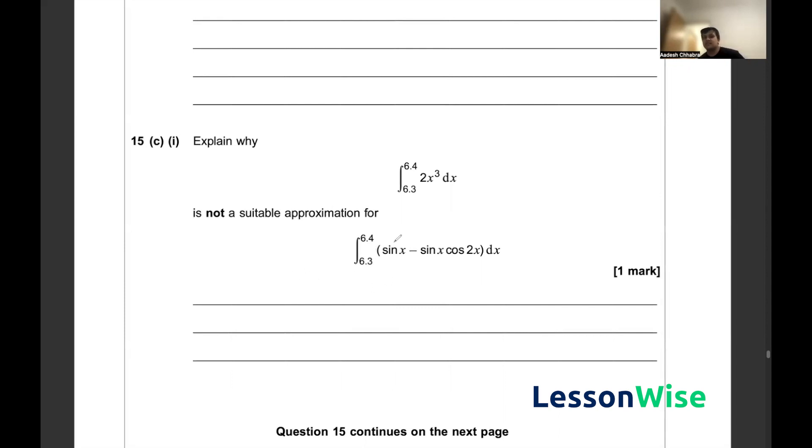It's a very simple answer: simply because 6.4 and 6.3 are not small values and the approximation that sin x minus sin x cos 2x equals 2x cubed is only valid for small angles.